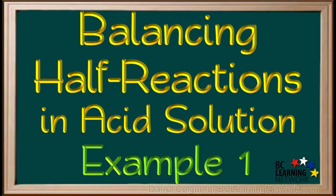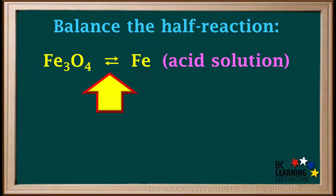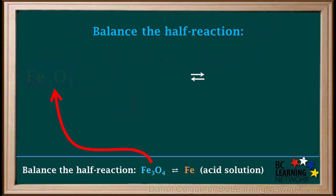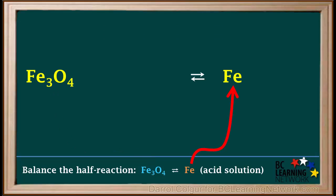Here, we'll go through an example of balancing a half reaction in acid solution. We're asked to balance the half reaction Fe3O4 gives Fe, taking place in acid solution. We'll write Fe3O4 here on the left side, and Fe on the right side here. We've left some room for adding other things.